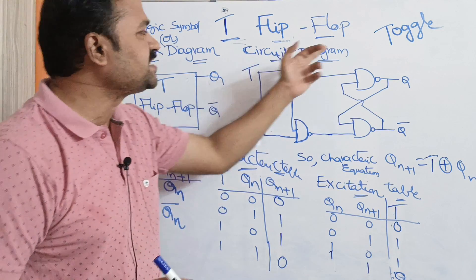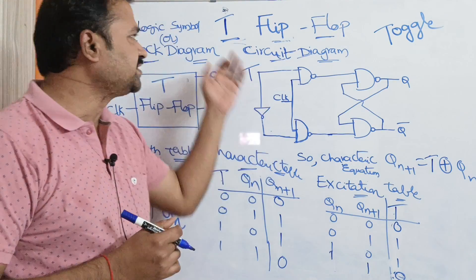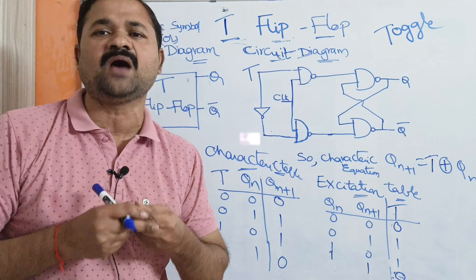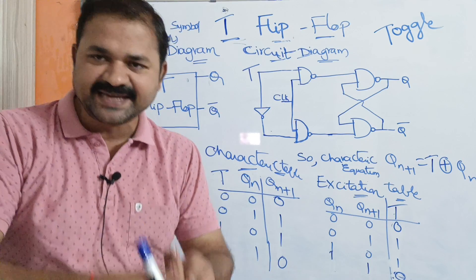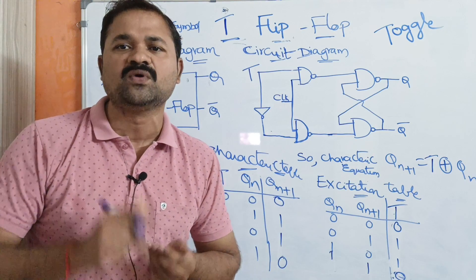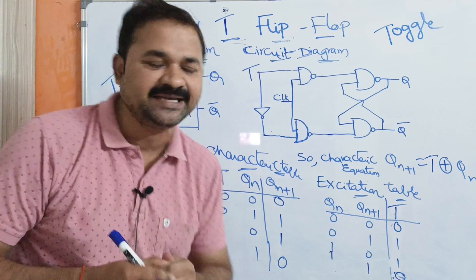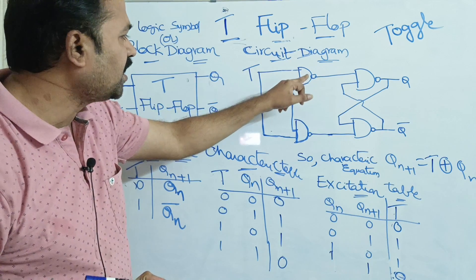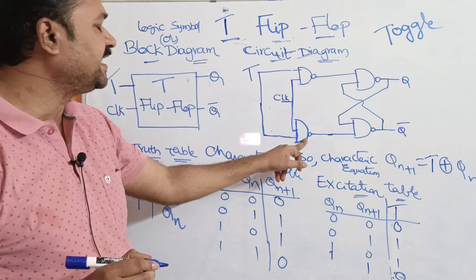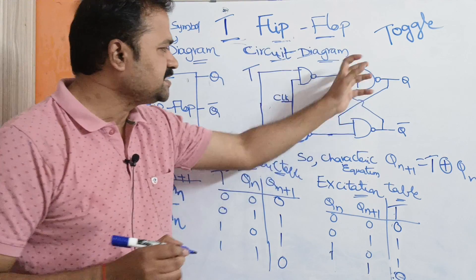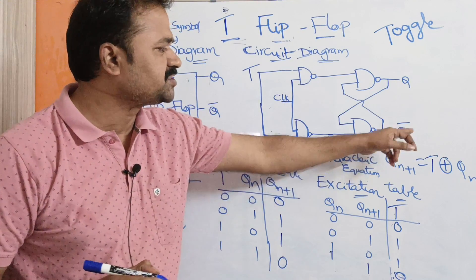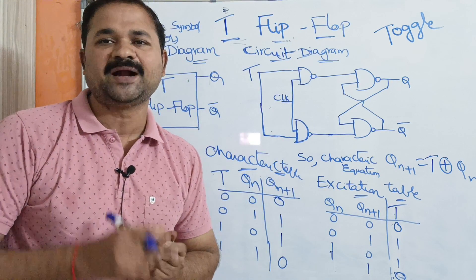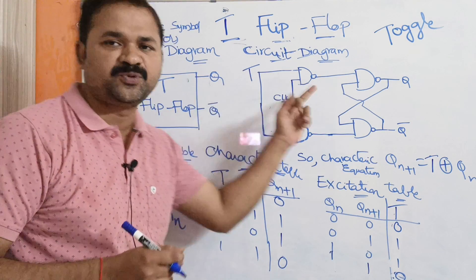Now let us see the logic circuit diagram. The circuit diagram for the T flip-flop is similar to the SR flip-flop, but in the SR flip-flop we have two inputs S and R, whereas here we have only one input T. T is passed to the first AND gate as well as the second AND gate, along with the clock pulse. This is nothing but an SR latch and it produces two outputs: Q and Q-bar.